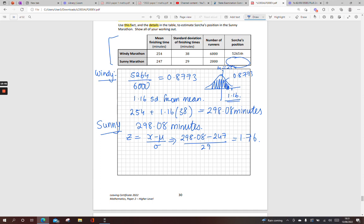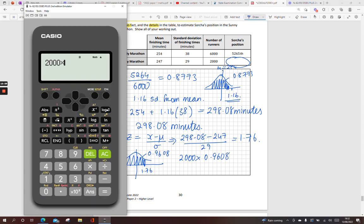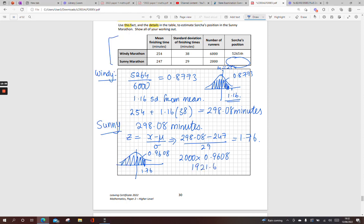And work out her position now. So if we're looking at the Z-score here, 1.76. What proportion or what percentage of people? So I'm looking at the table again. 1.76 gives me 0.9608. Or 96.08% of the population have finished in front of her. So 2000 multiply that by 0.9608. 1921.6 people finish in front of her. So that means she must come 1922 in her position.